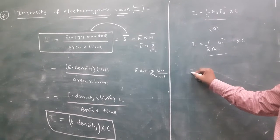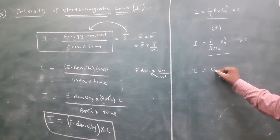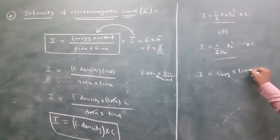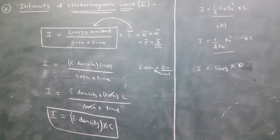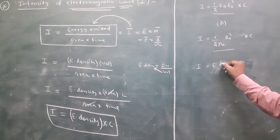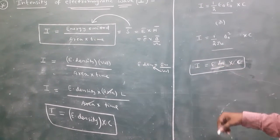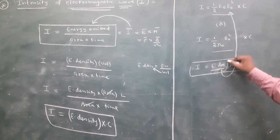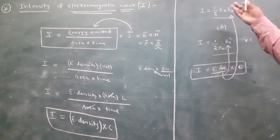The first formula for intensity is energy flowing per unit area per unit time. Another formula is intensity equals average energy density into C. These are the intensity formulas in this topic.